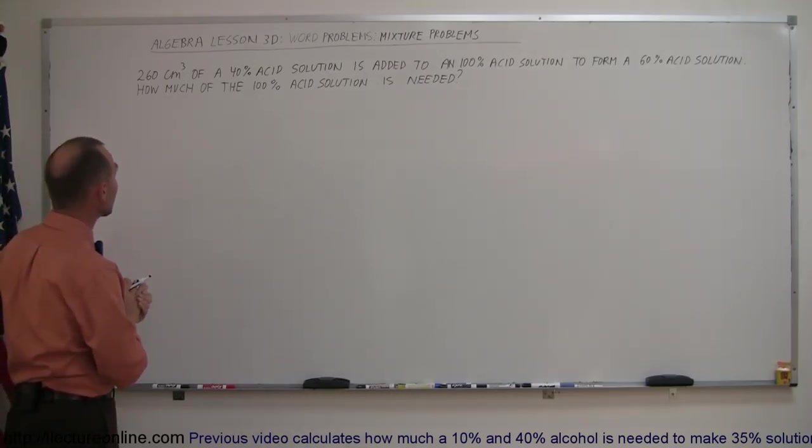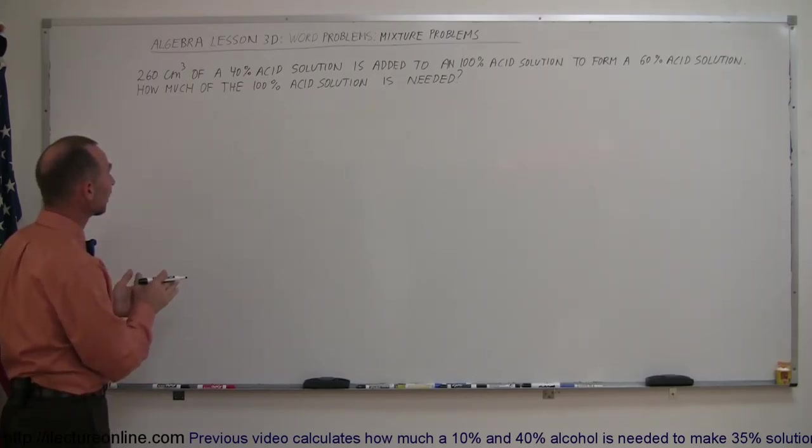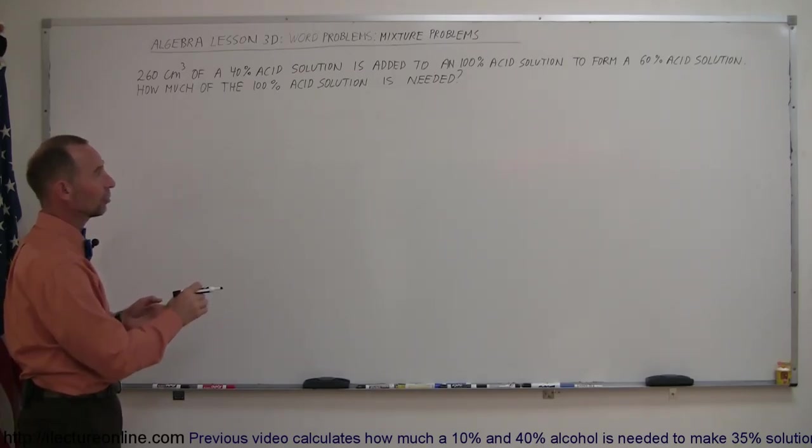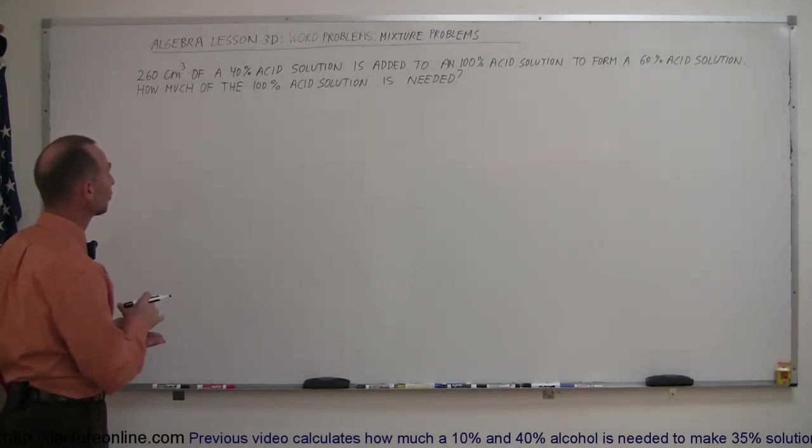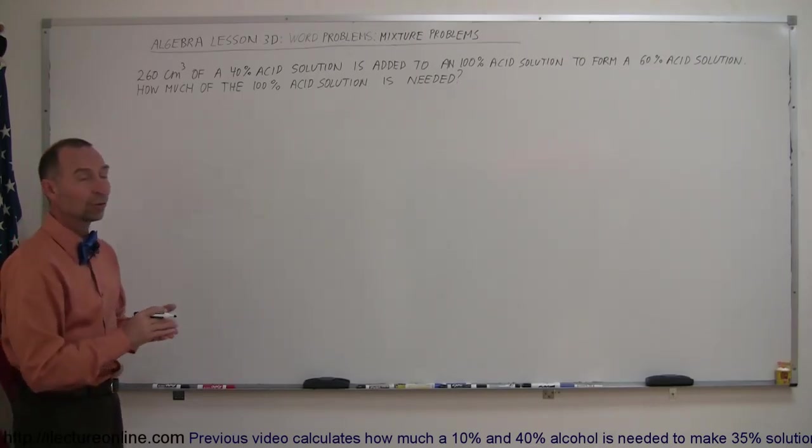The word problem says that we have 260 cubic centimeters of a 40% acid solution and it is added to a 100% acid solution to form a 60% acid solution. How much of the 100% acid solution is needed to accomplish that?